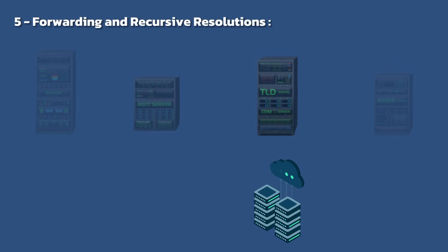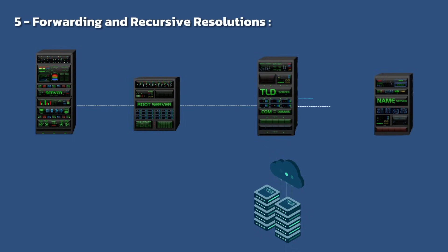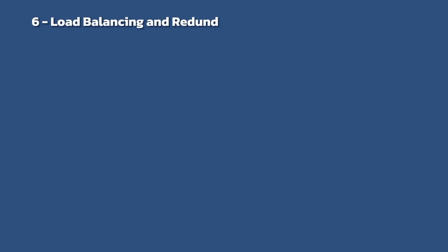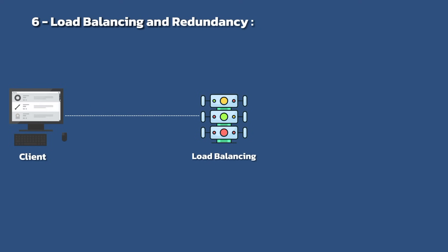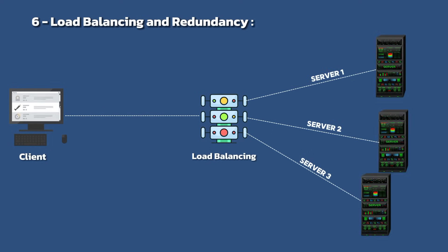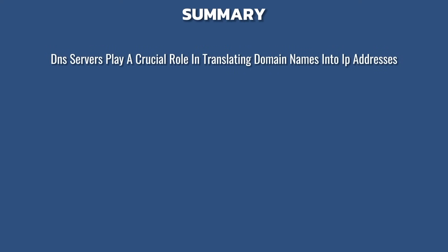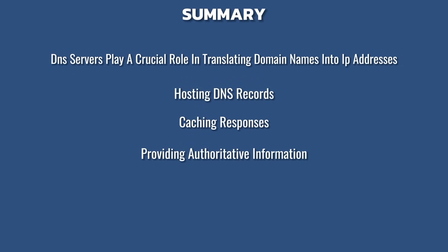DNS servers can perform recursive resolution by forwarding queries to other DNS servers if they do not have the requested information in their cache or authoritative data. Recursive DNS servers iterate through the DNS hierarchy querying multiple servers until they obtain the final authoritative answer. DNS servers can also be configured for load balancing and redundancy, distributing incoming DNS queries across multiple servers to ensure high availability, enhanced performance, and failover support in case of server failures.